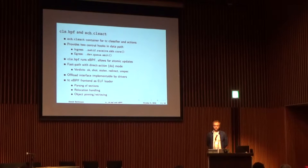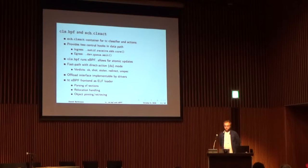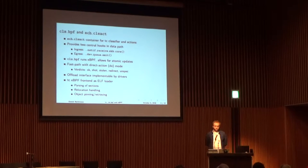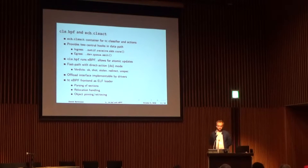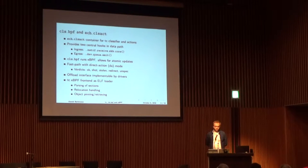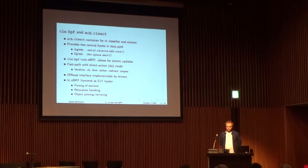The TC front-end has the eBPF loader, which does quite a bit of work — it parses all sections from the object file. Sections can contain map specifications that the kernel sets up and pushes over the BPF system call to retrieve file descriptors. TC then does relocation handling, injecting the file descriptor into specific instructions as an immediate value. It also does object pinning and retrieving so you can share maps between various programs.